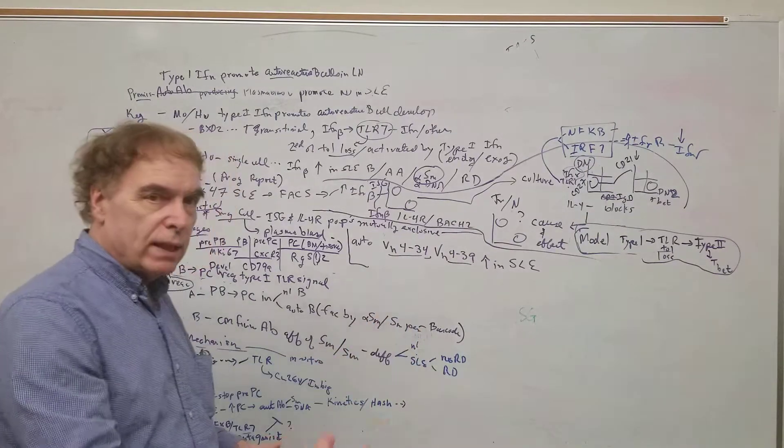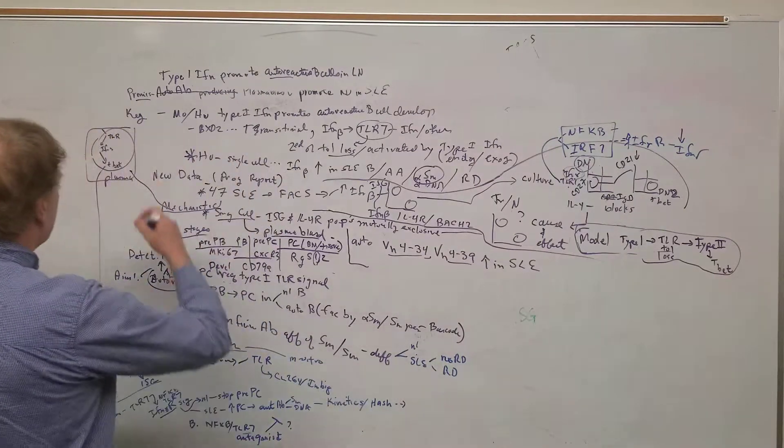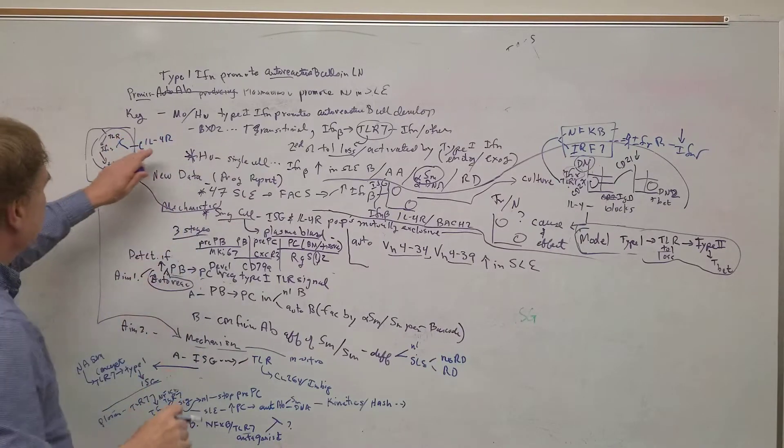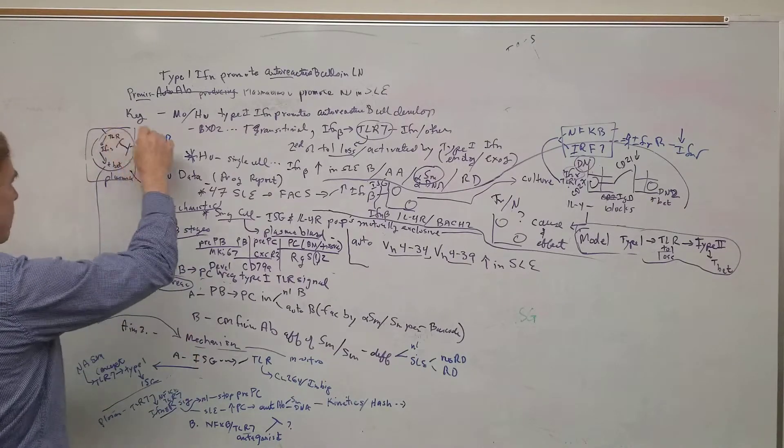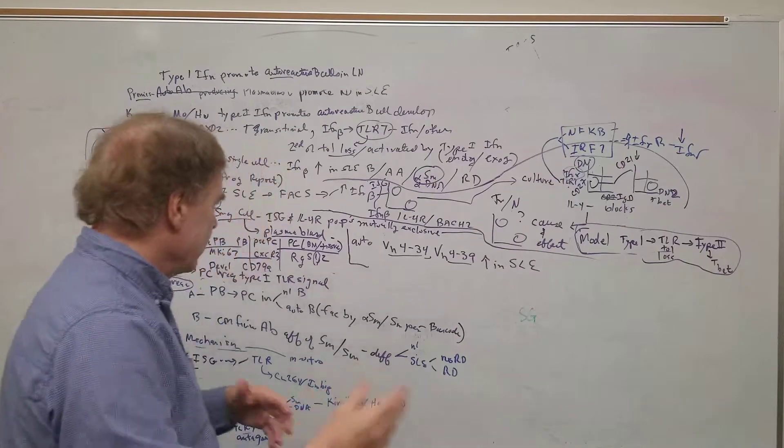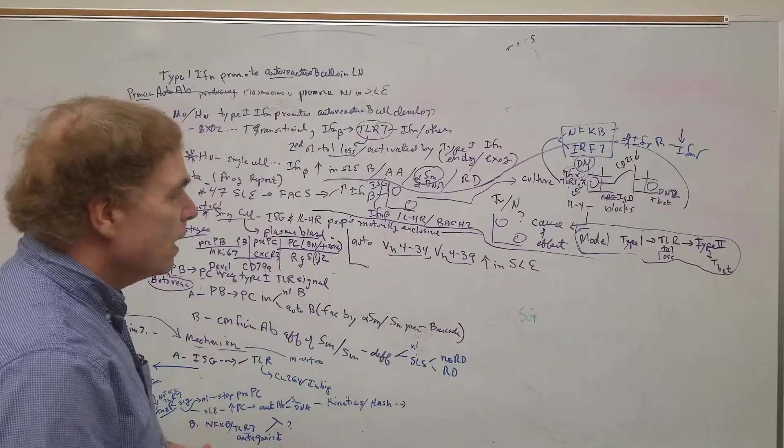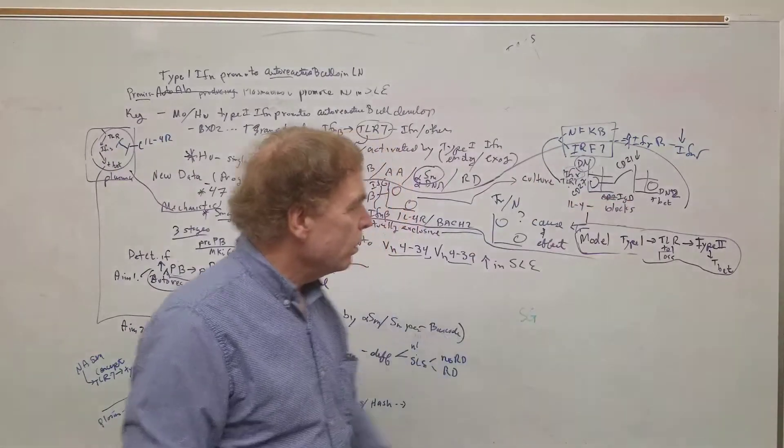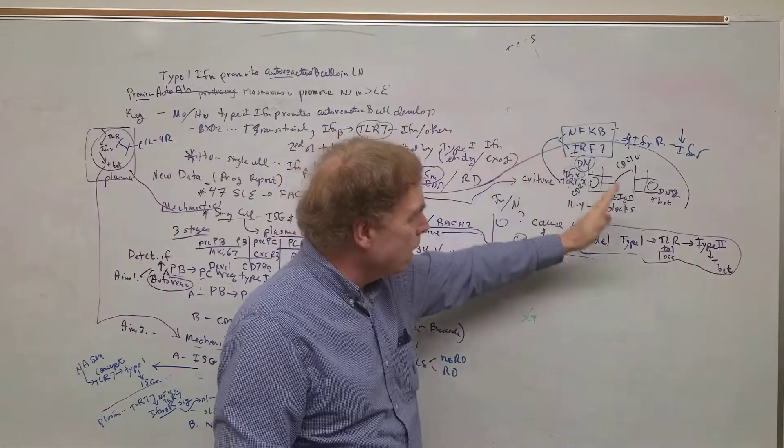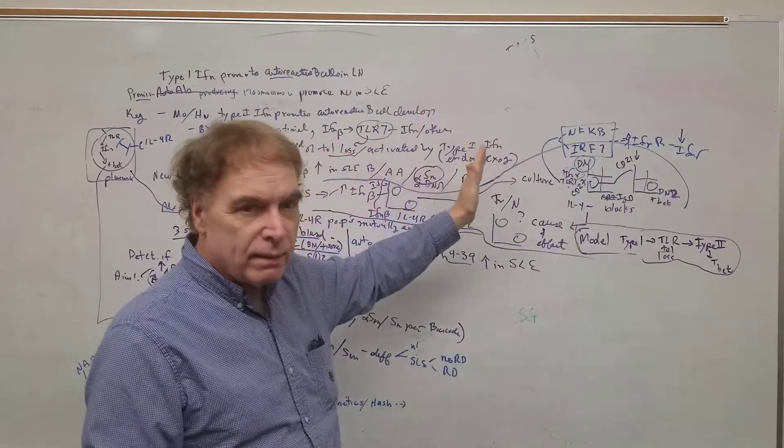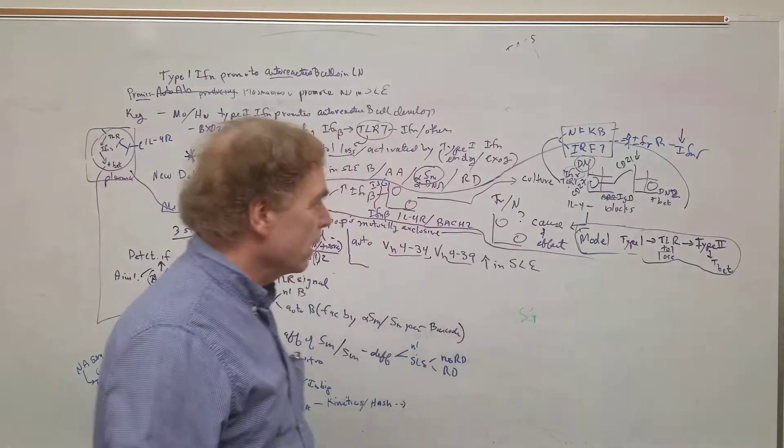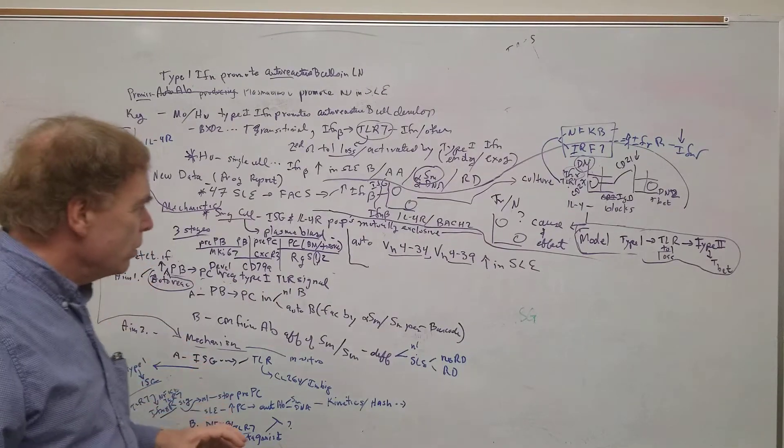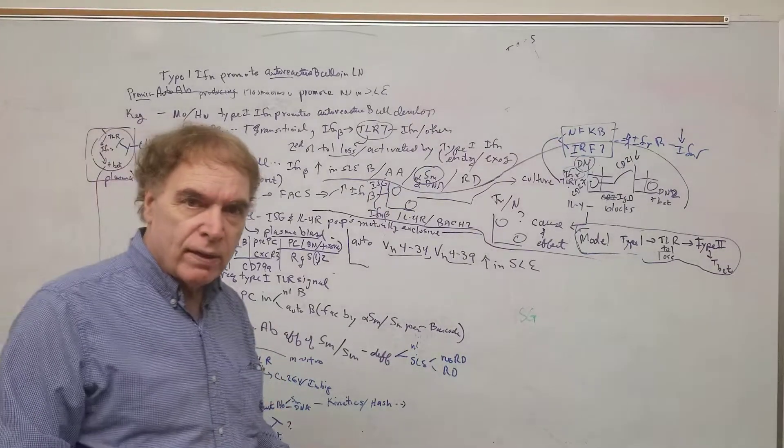But we did show, at the same time, as a mechanistic way to understand this, you can culture people. When you take all the B cells, this is the total B cells in culture, and you can divide those into first double-negative based on no IgD, so they're not naive, they're not IgD-positive, and CD27, so they're not memory, so they're down here double-negative.